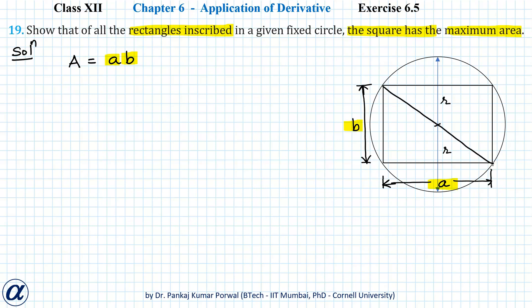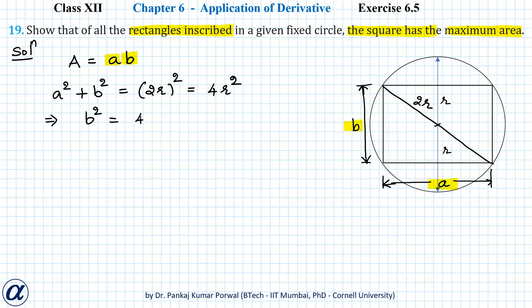The diagonal of this rectangle passes through the center of the circle, so the diagonal will also be the diameter of the circle. Therefore, the length of this diagonal will be 2R. From the Pythagorean theorem, I can write A squared plus B squared equals 2R whole squared, that is equals to 4R squared. From this, I can write B squared equals 4R squared minus A squared, or B equals the square root of 4R squared minus A squared.